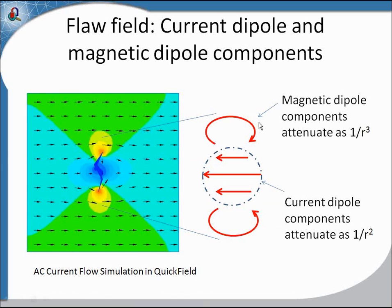This analysis neglects the flow of eddy current around the edges of the defect. This is an AC current flow simulation conducted in Quick Field, showing a flaw with zero conductivity, done in the AC current module. The flaw current navigates around the defect with lower current density near the center of the defect and a higher current density — almost an order of magnitude greater — near the edges of the flaw.